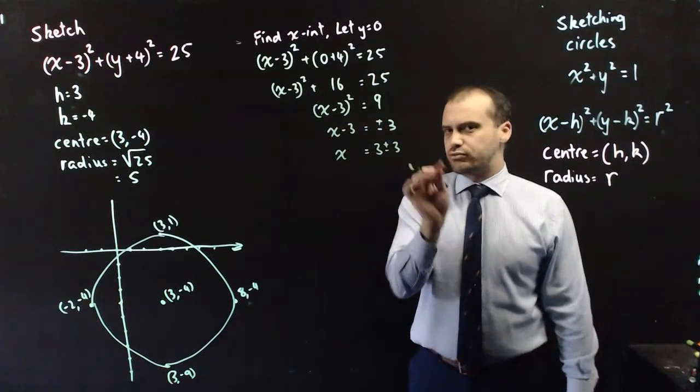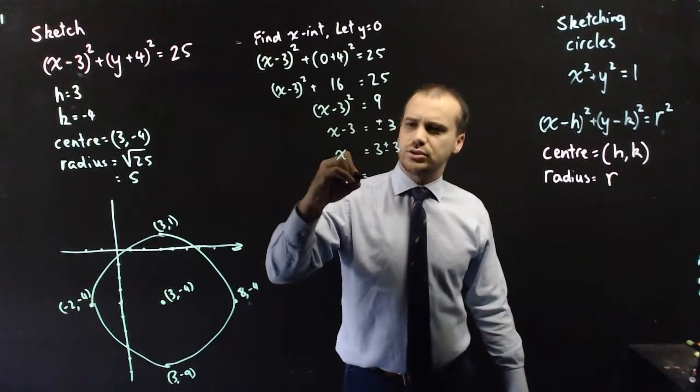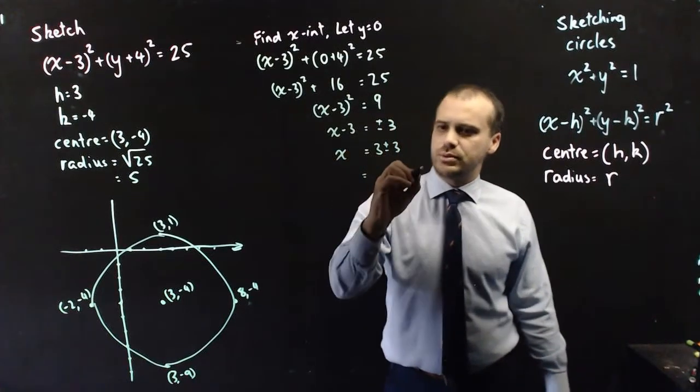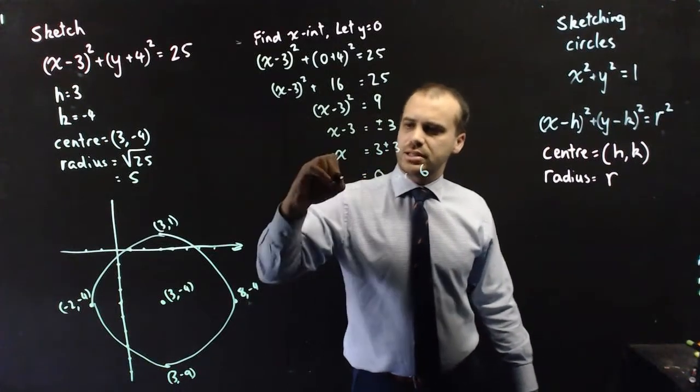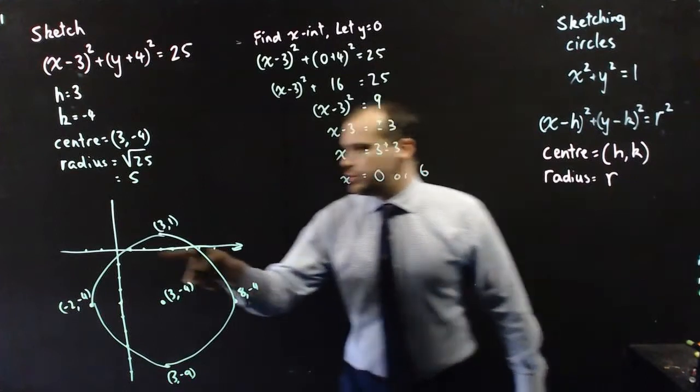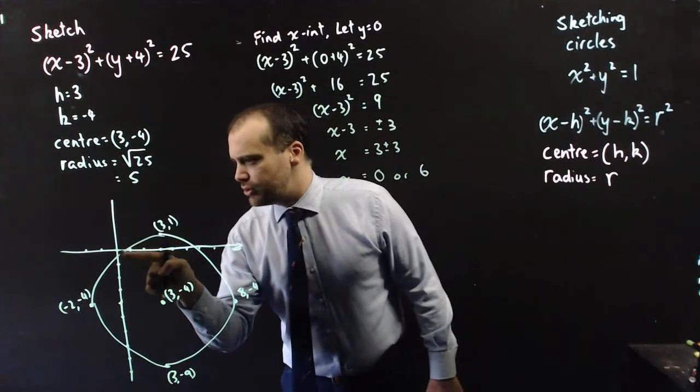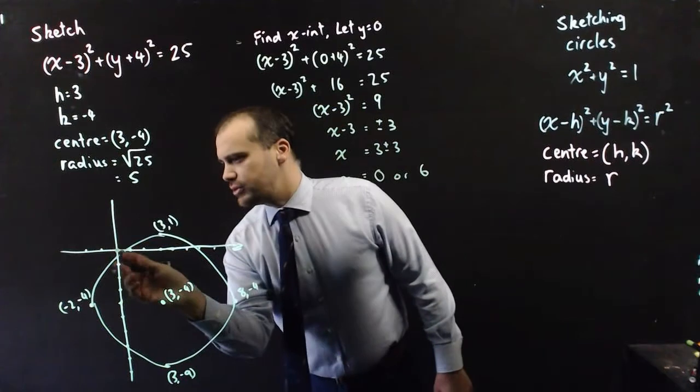Now, this means that my drawing is slightly out, because these 2 solutions are 3 plus 3, which is 6, and 3 minus 3, which is 0. So, my answers are 0 or 6, which means that this point here really needs to go right through there.